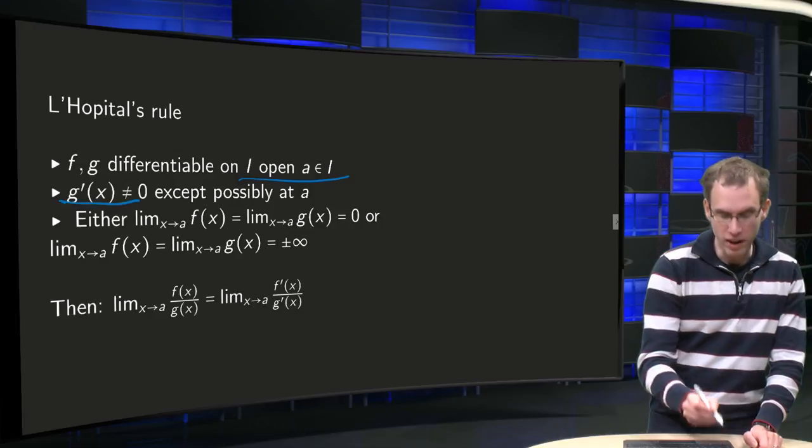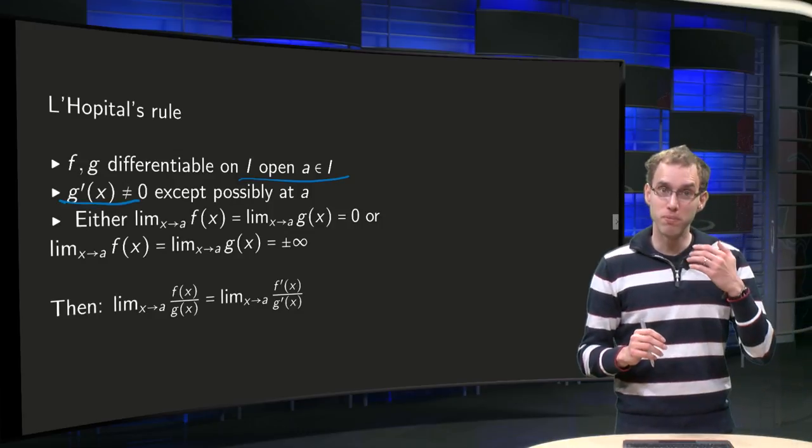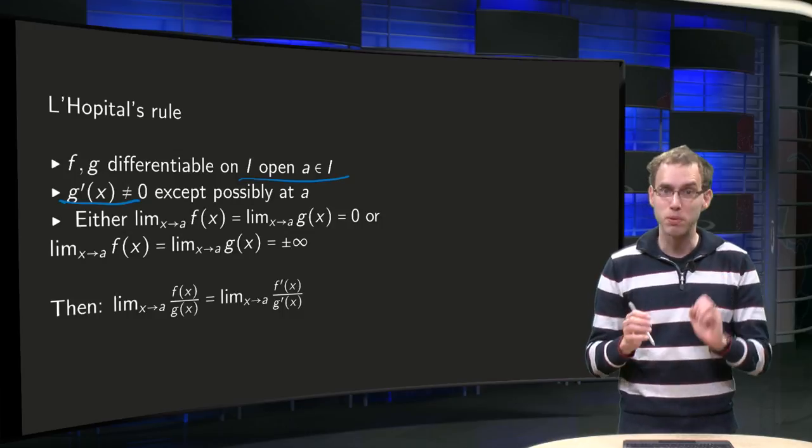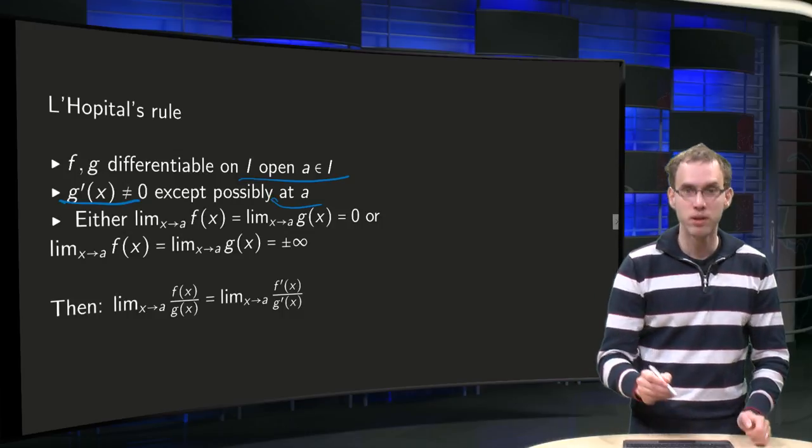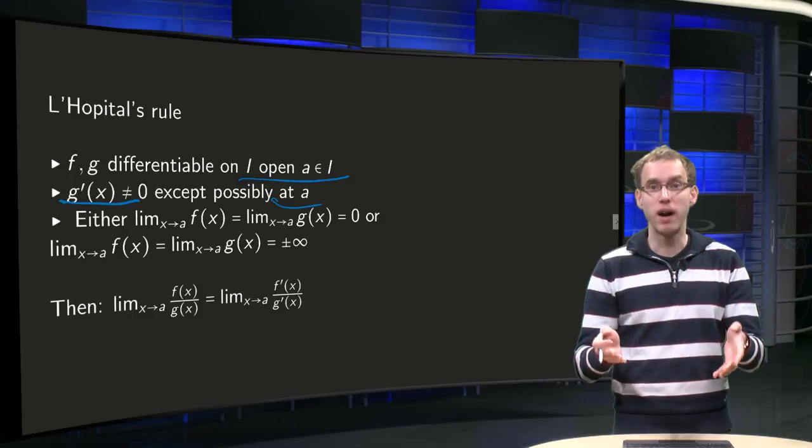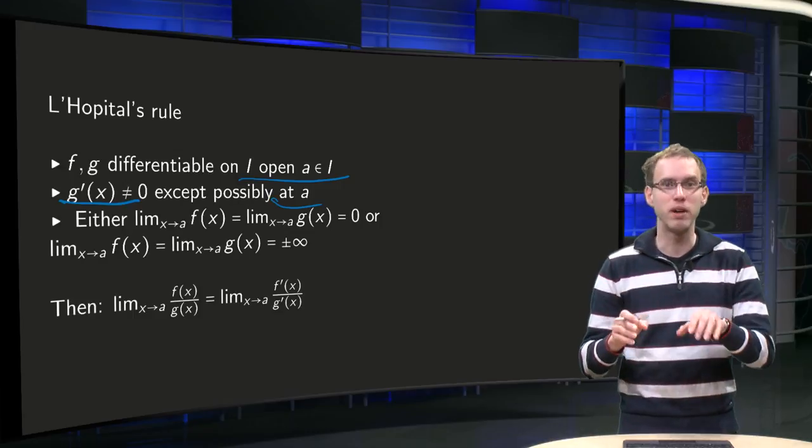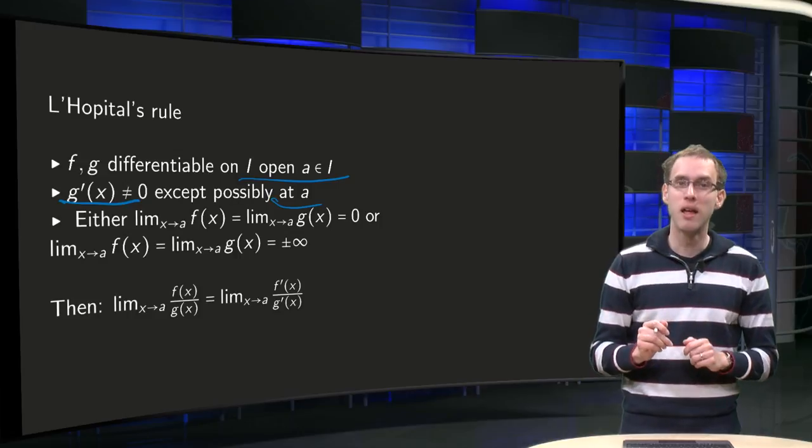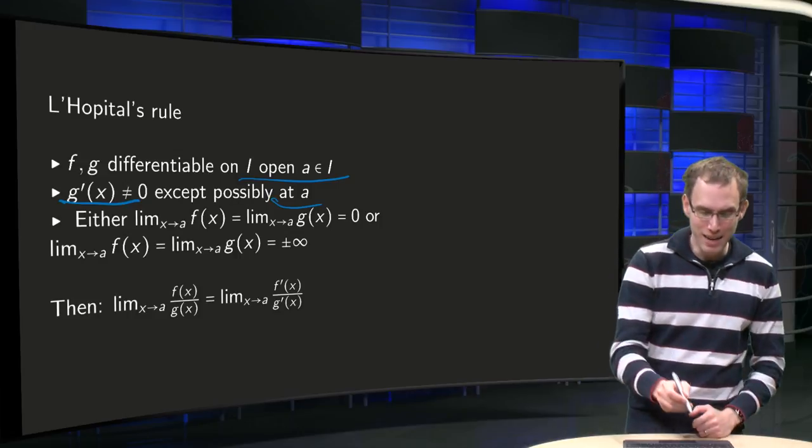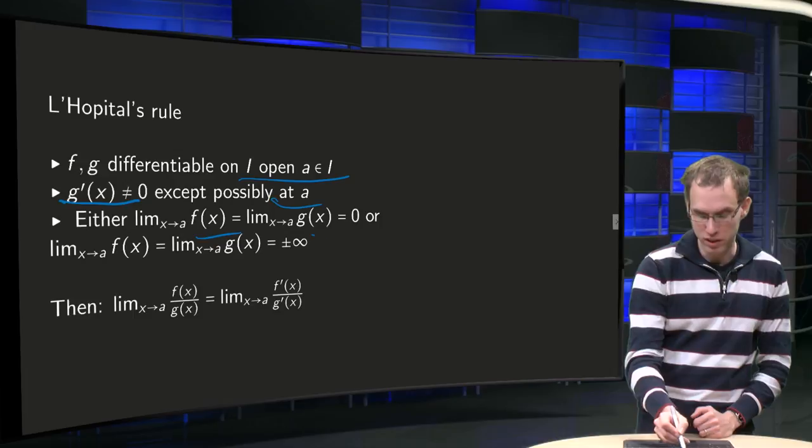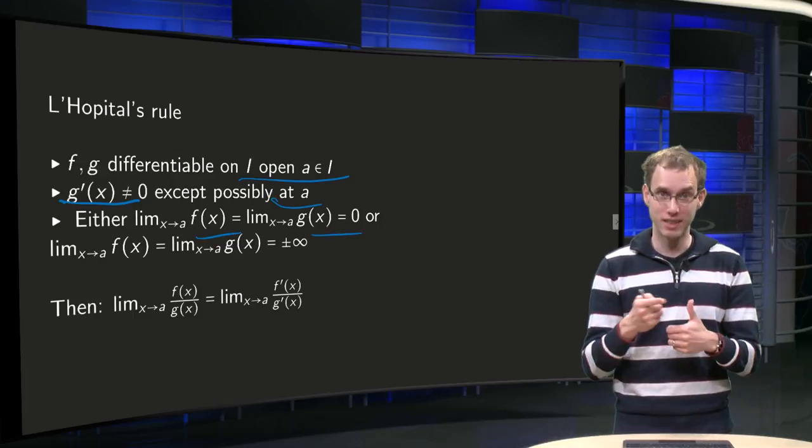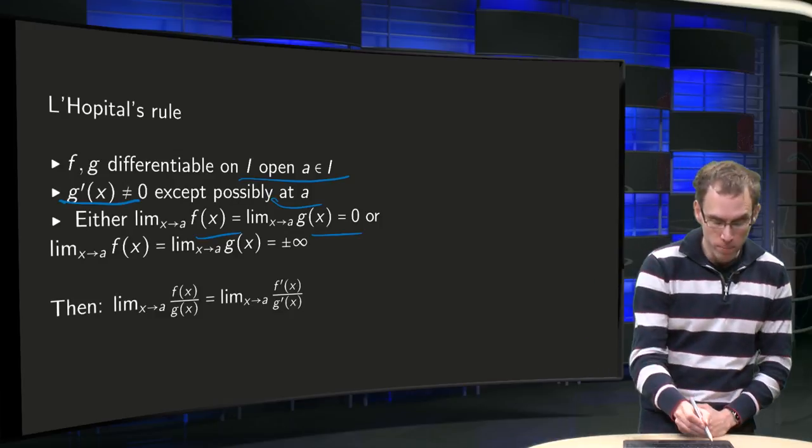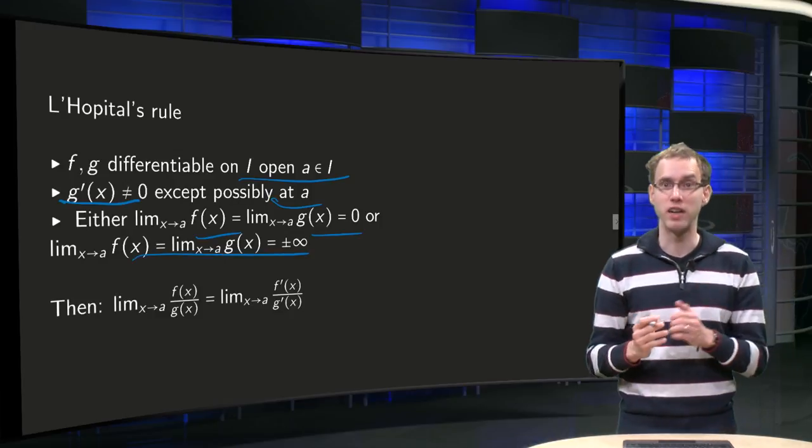Furthermore, we are going to divide by g. So g'(x) is not allowed to be 0 except possibly at a. So in your interval we have a g' and we are going to divide by it so it is not allowed to be 0. So that is a condition for it to work. And suppose now that either both limits of f and g are 0. So that is the case in which L'Hôpital's rule works. Both limits are 0 or both limits are plus or minus infinity.